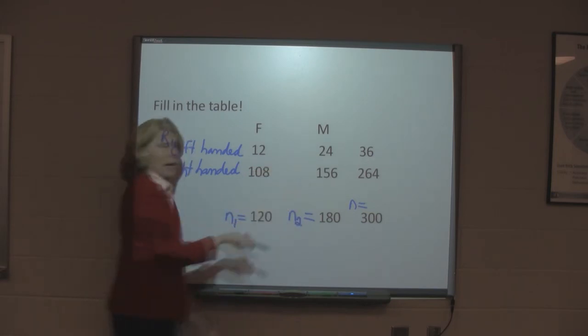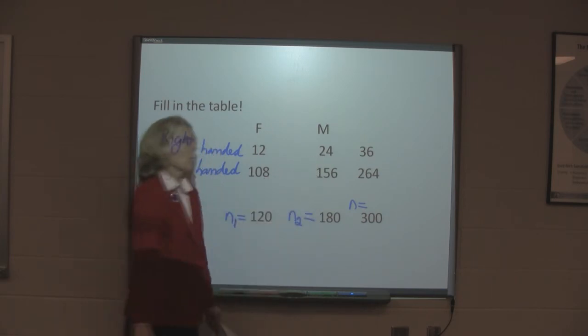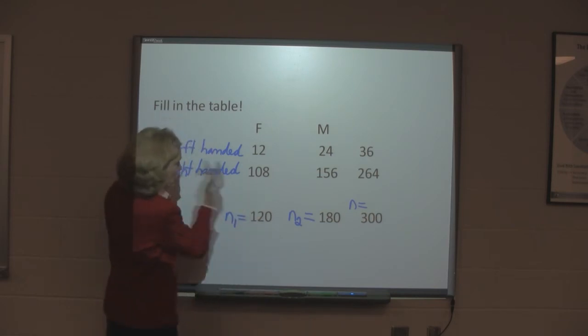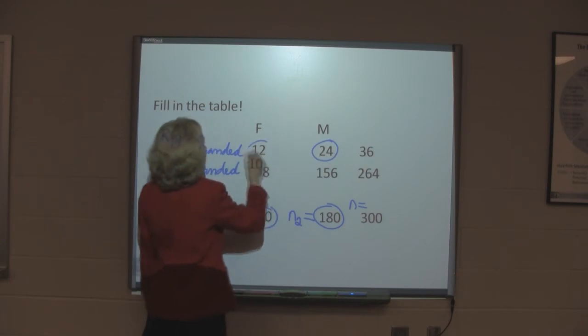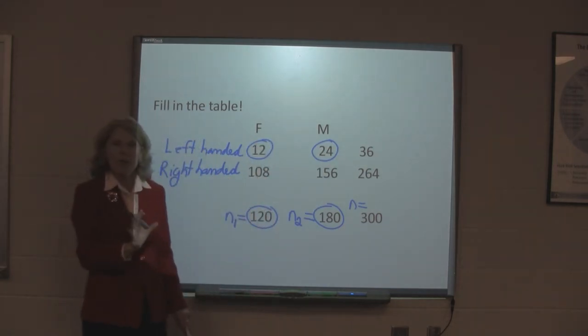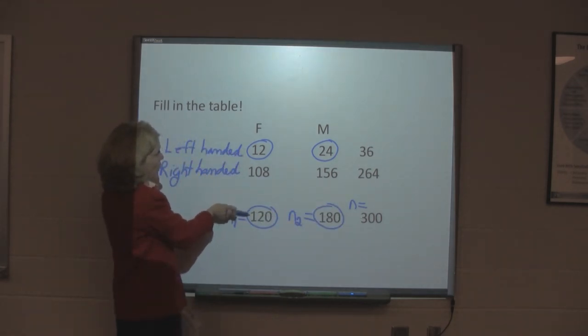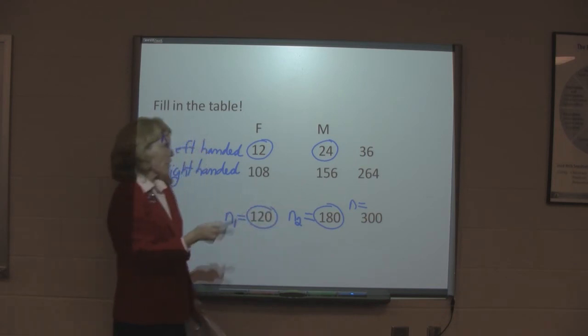In the male column, we have a similar situation. We've got 180 males. And out of those, 24 are left handed. Okay. So, if we know those numbers, the whole rest of the table can be filled in. 120 plus 180 is 300. And then, out of 120 females, 12 are left handed. So, the rest, 108 are right handed. Out of 180 males, 24 are left handed. So, the rest, 156 are right handed.